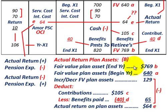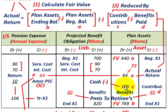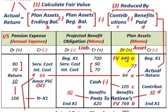To summarize our discussion on plan assets: you start with the beginning of the year fair value of your plan assets, then determine the fair value at the end of the year for your security investments. You also need to know what contributions were made to the pension plan and what benefits were paid out. Based on our equation, you can determine the actual return. You can't just compare beginning and ending fair values — you must also include contributions made and benefits paid out.